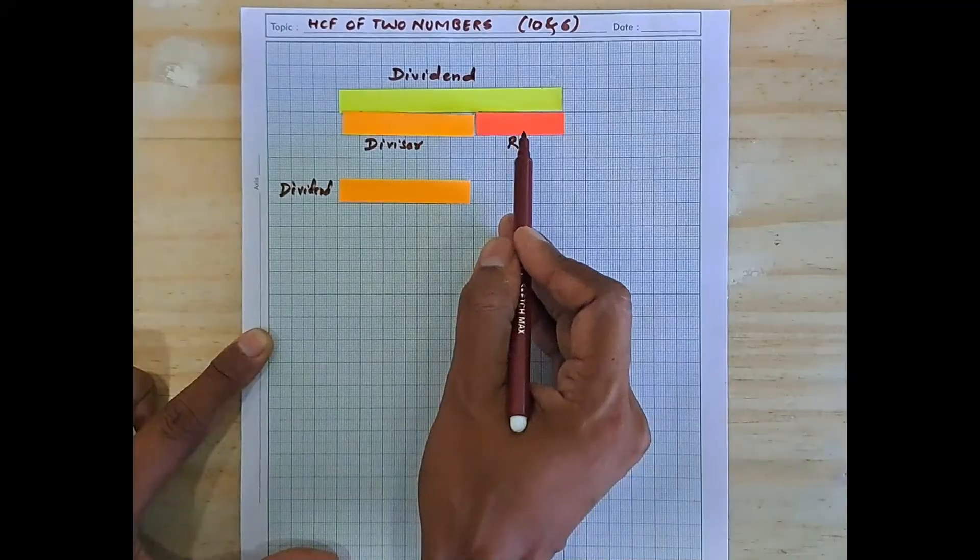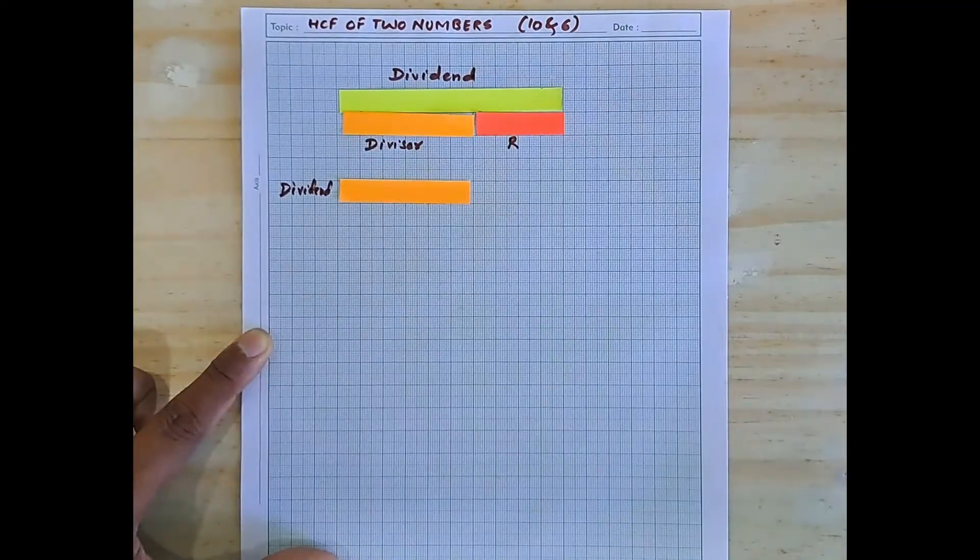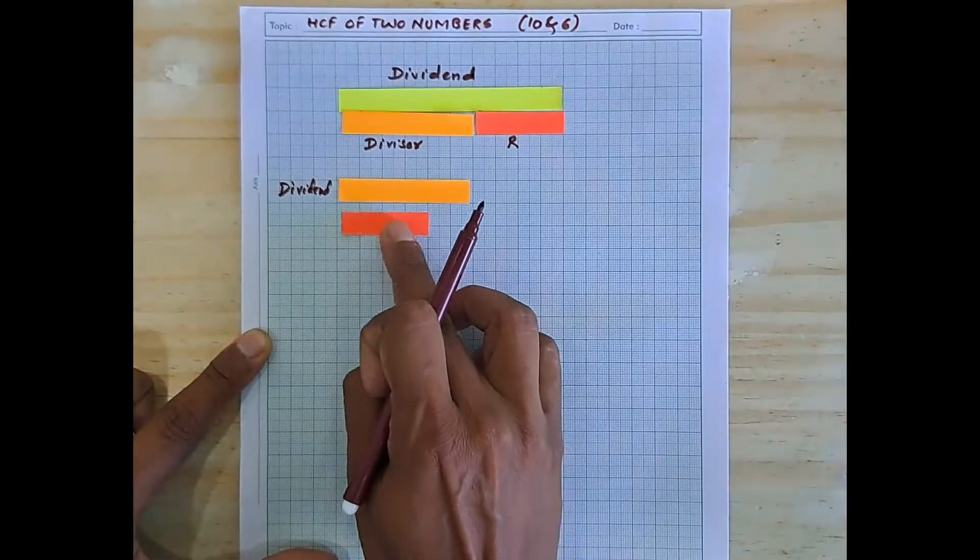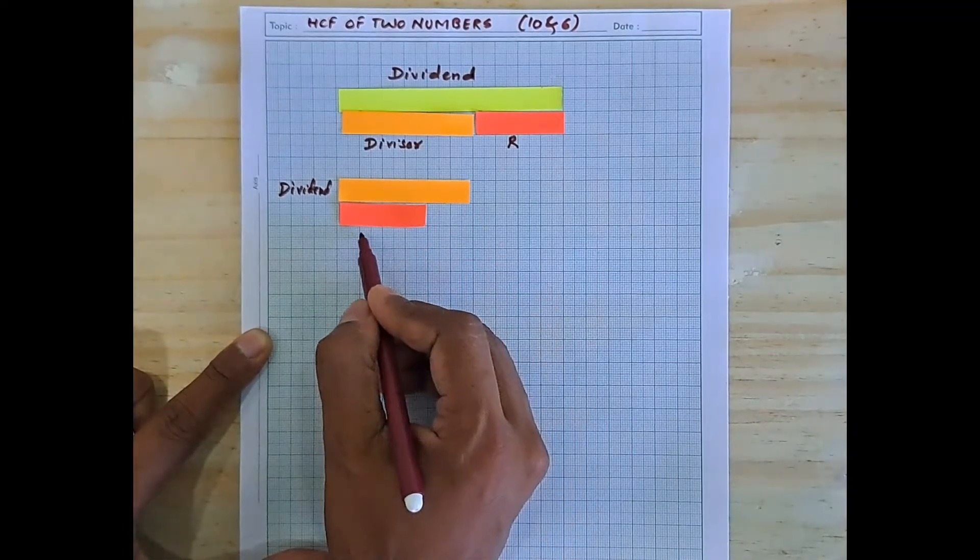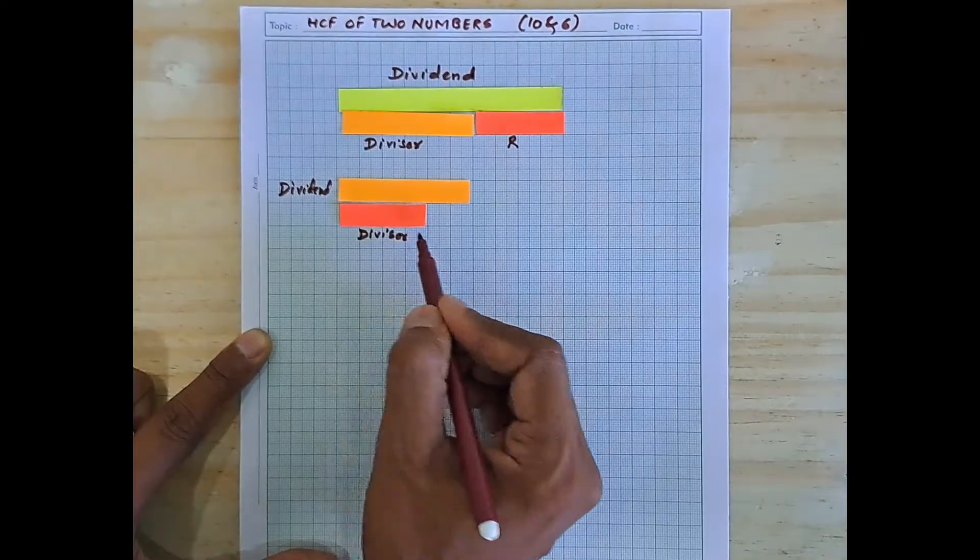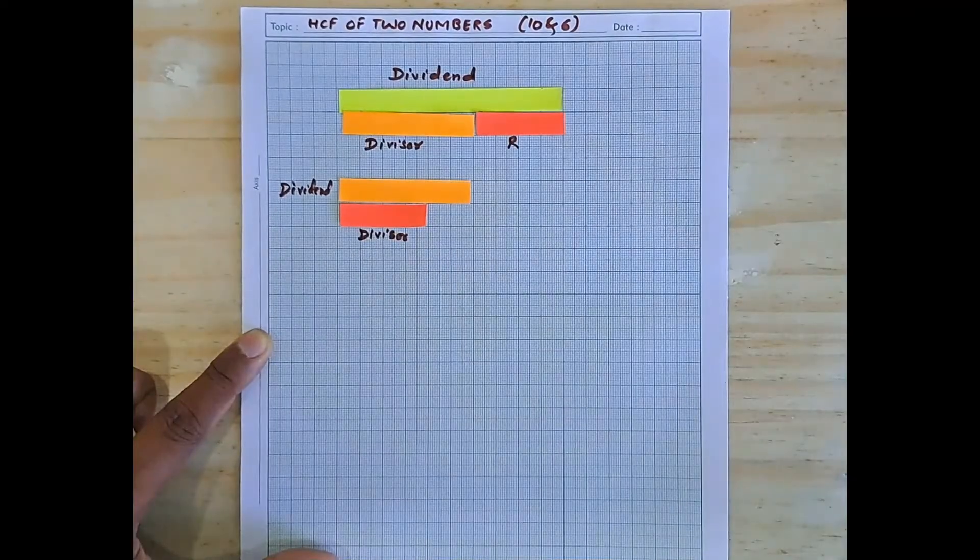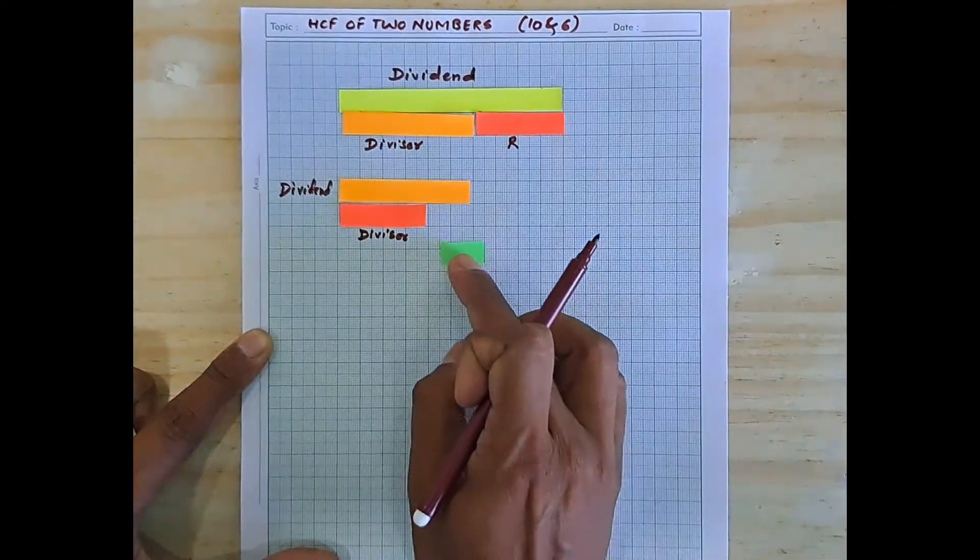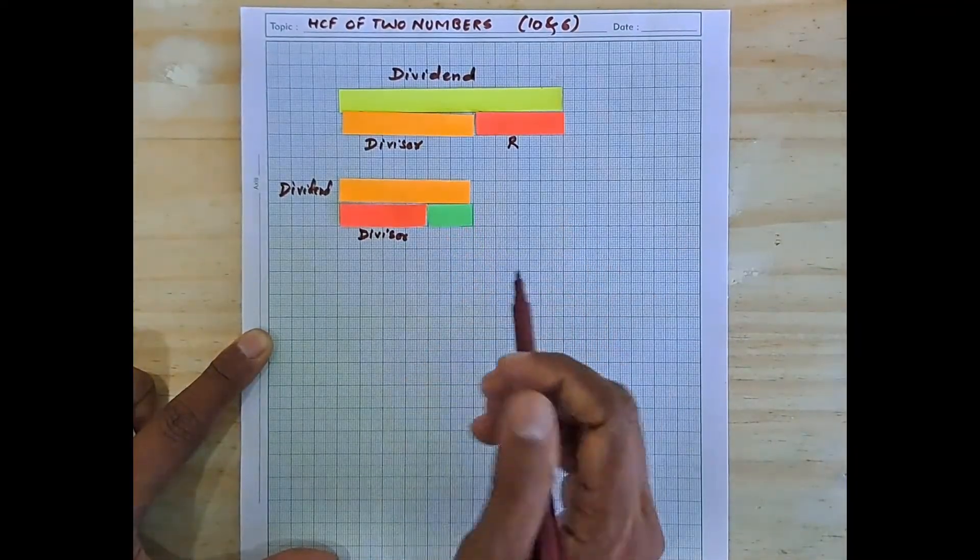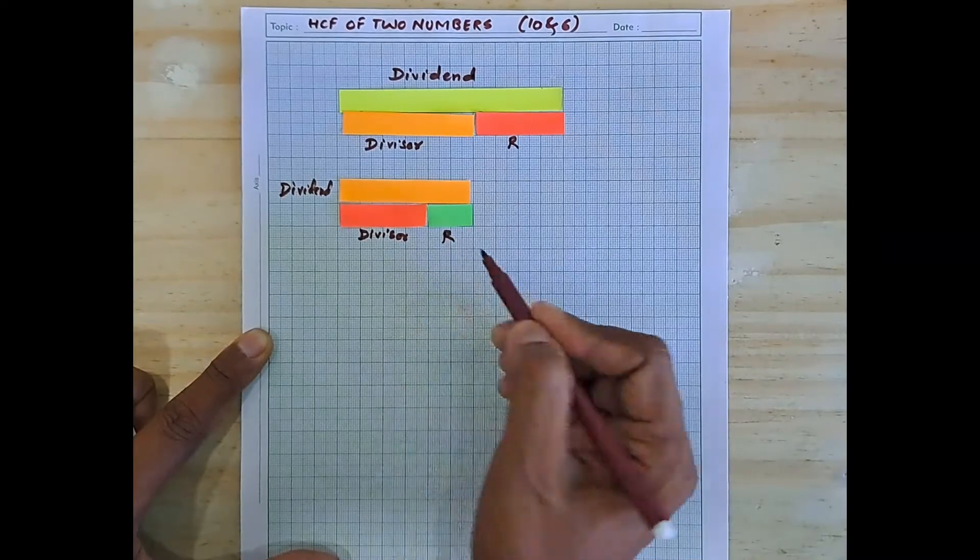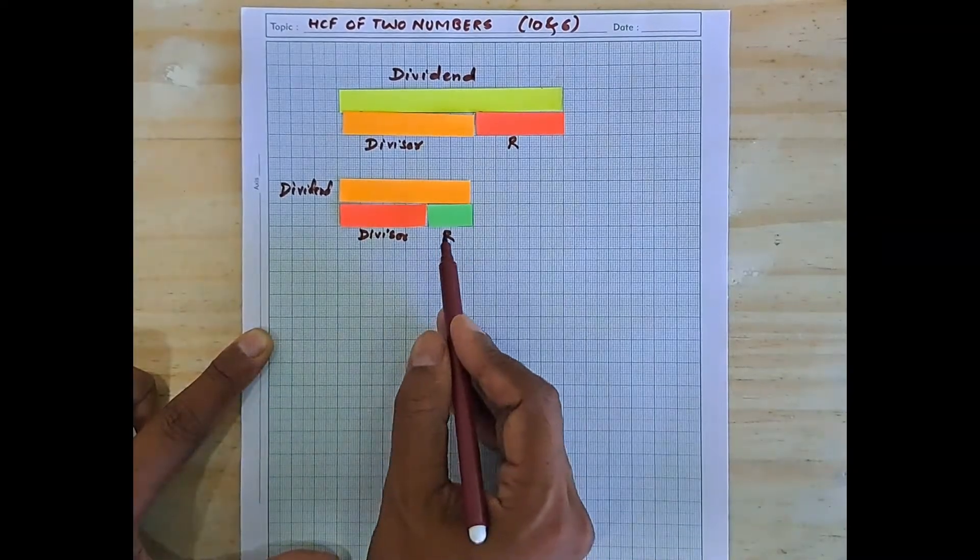And I will divide it by the remainder. I need another strip which measures 4 centimeter. Now this is the divisor, the new divisor. And you can see the remainder now. The remainder is 2 centimeter. If you place another strip of a different color here like this, it will surely fit in. And this will be the new remainder. But the remainder is not 0, right?